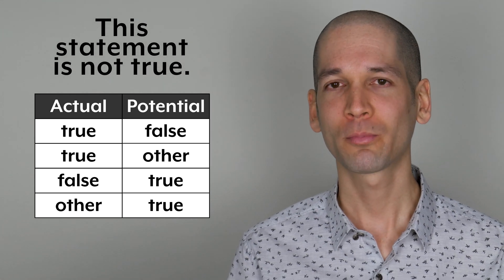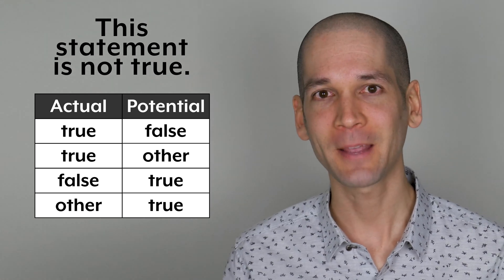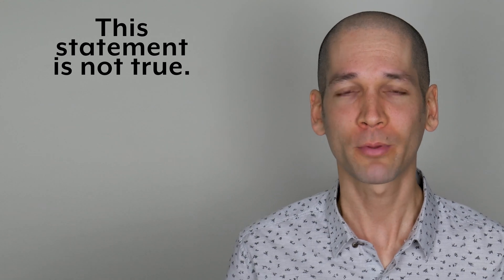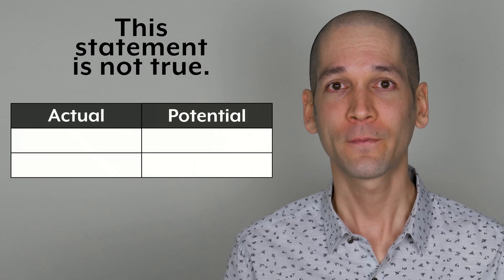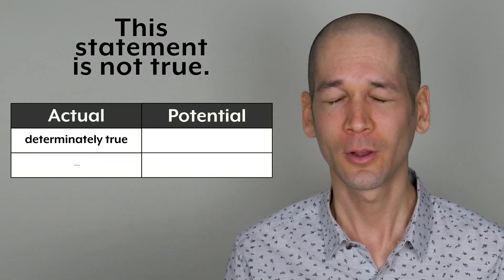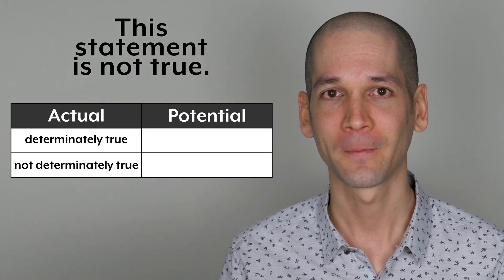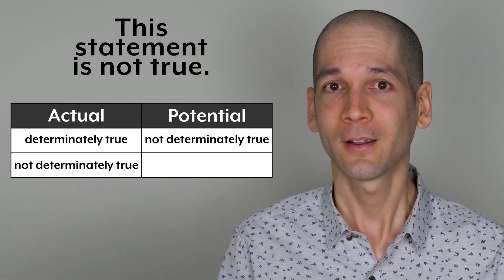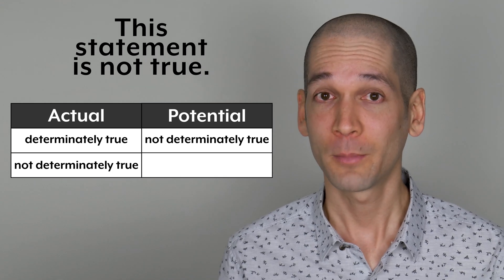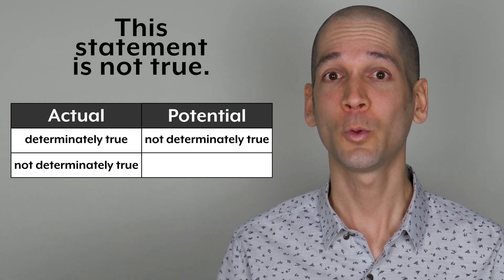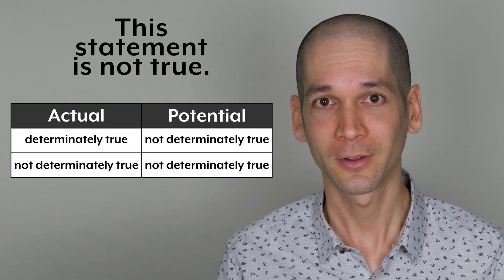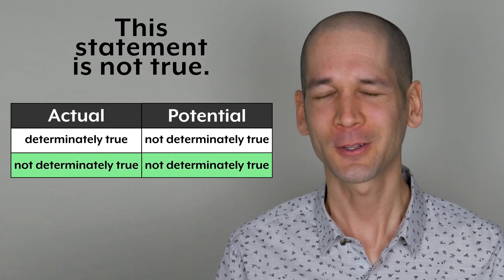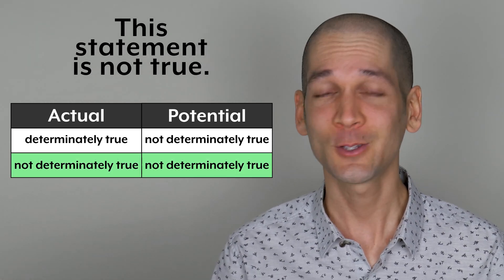But perhaps the truth predicate doesn't apply to this statement. Perhaps we first need to ask whether it's determinately true or not determinately true. If it's determinately true, then it can only be not determinately true. But if it's not determinately true, then it can only be not determinately true. The actual and the potential agree when the statement is not determinately true, so there is no contradiction.